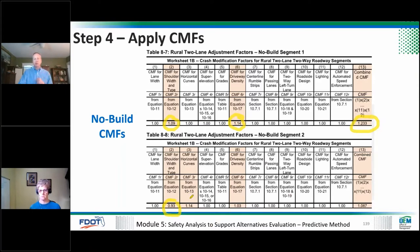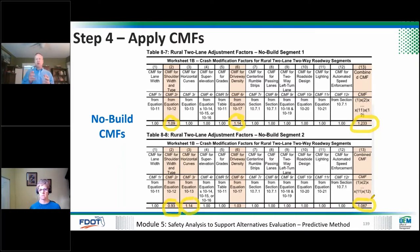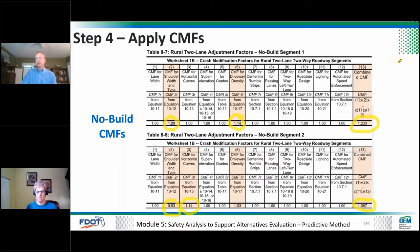We divided the segment based on shoulder width, and you can see that plays out — the eight-foot shoulder has a lower CMF than the four-foot. The second segment has a curve which shows up in the CMFs as a 14-15% change in crashes. You want to understand which factors are moving the needle — for segment one it's driveway density and shoulder; for segment two it's the curve. Did we get the curve in there right? Make sure someone on your team understands that the model is doing what you expected and you're getting the right answers — don't let it just be a black box.